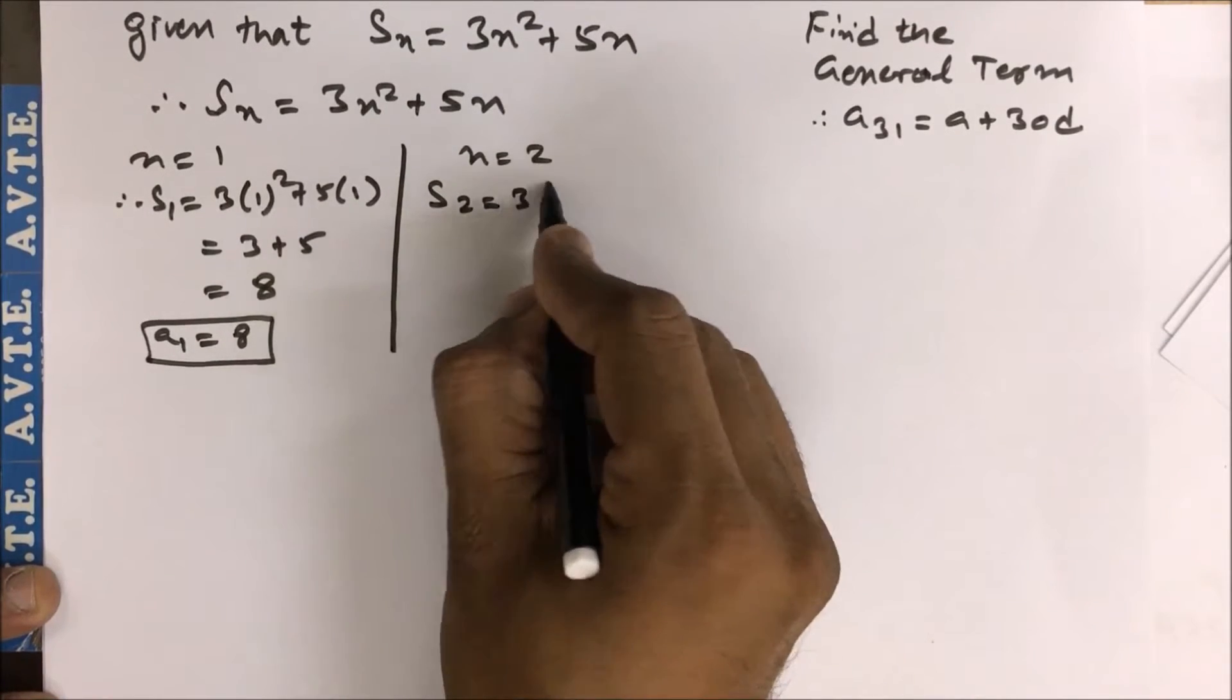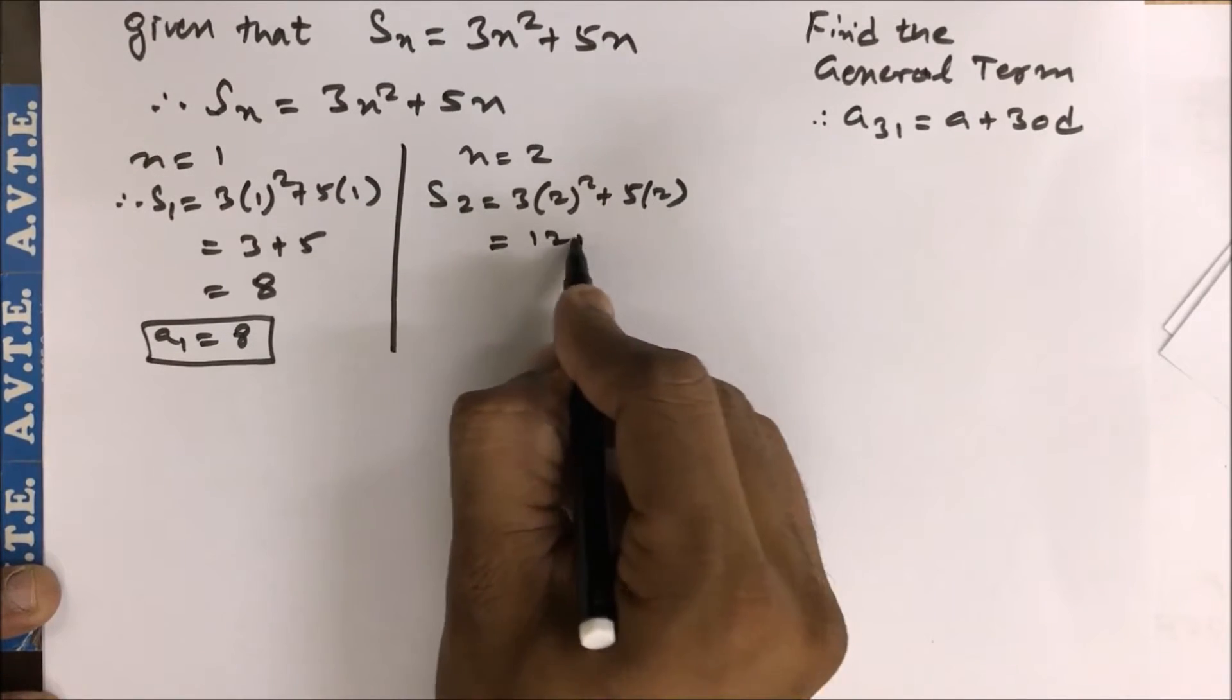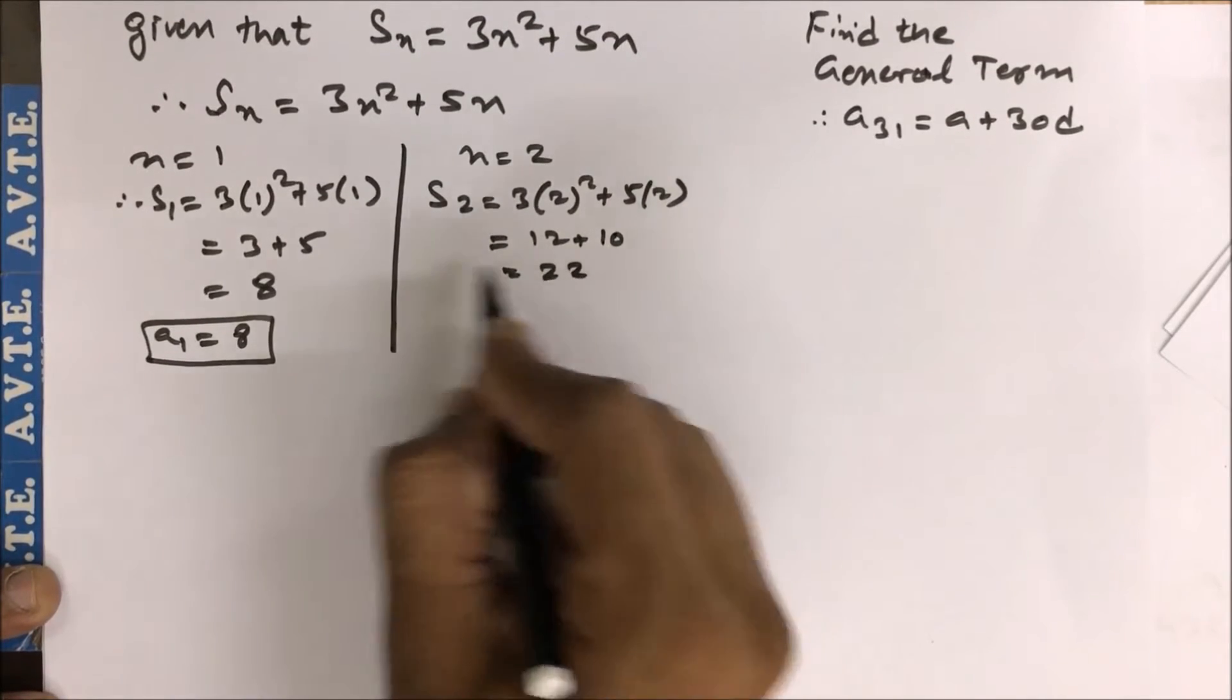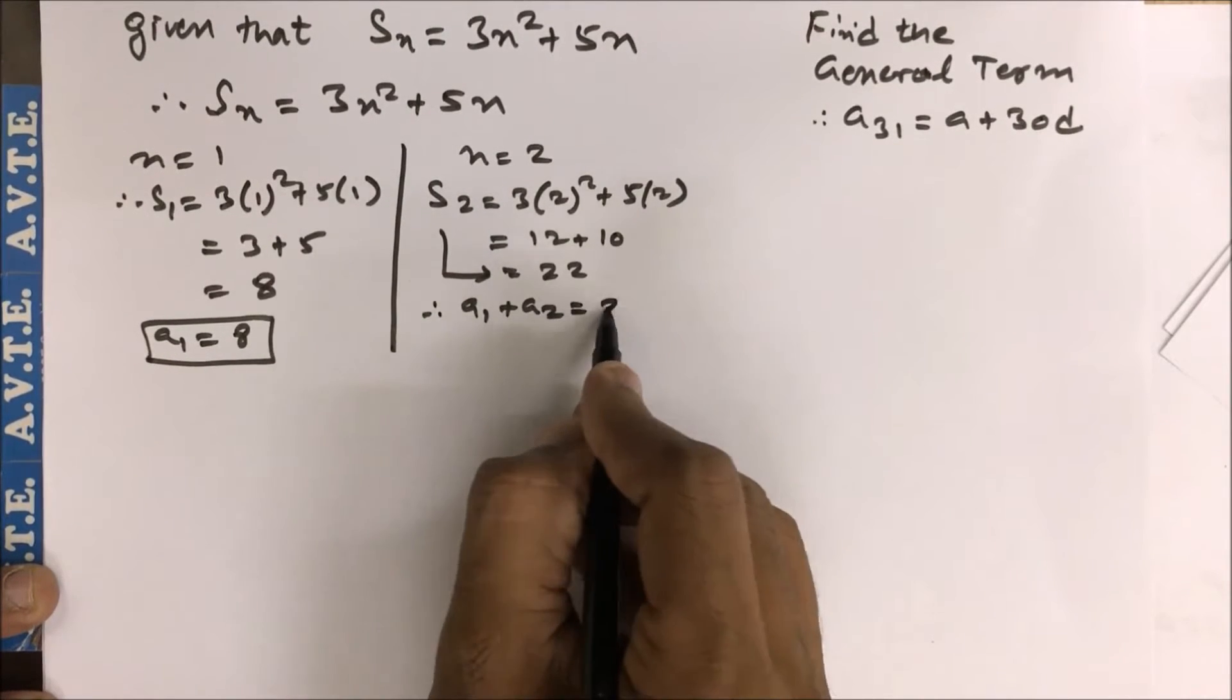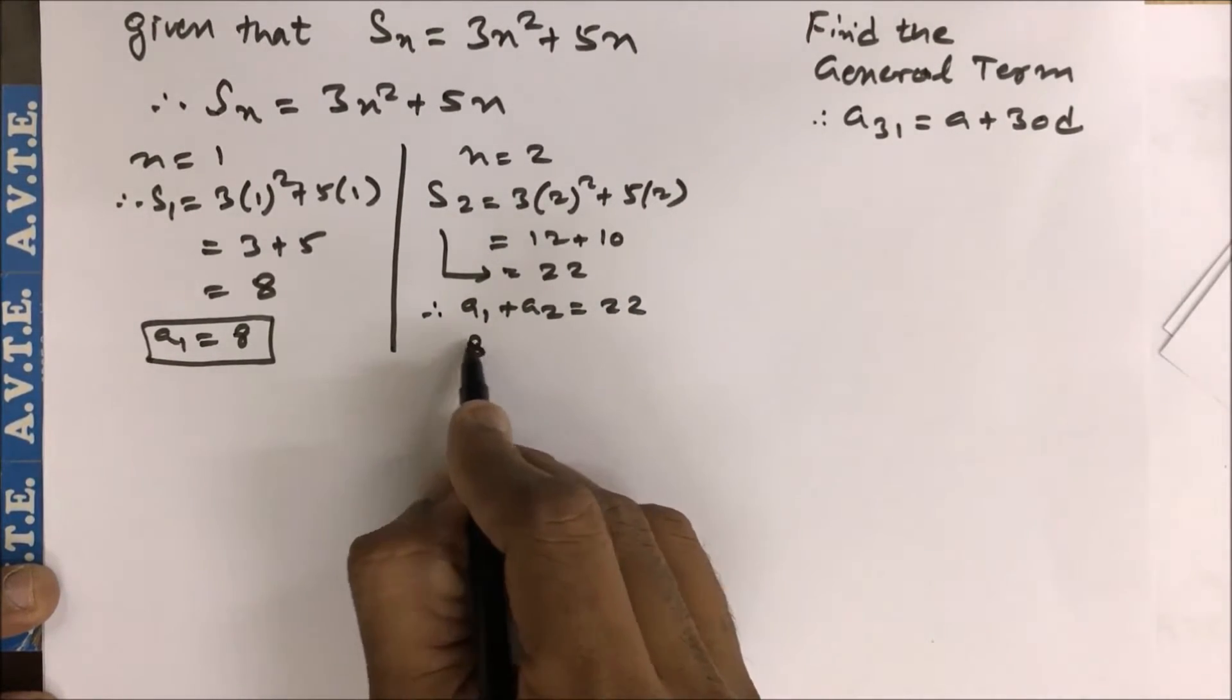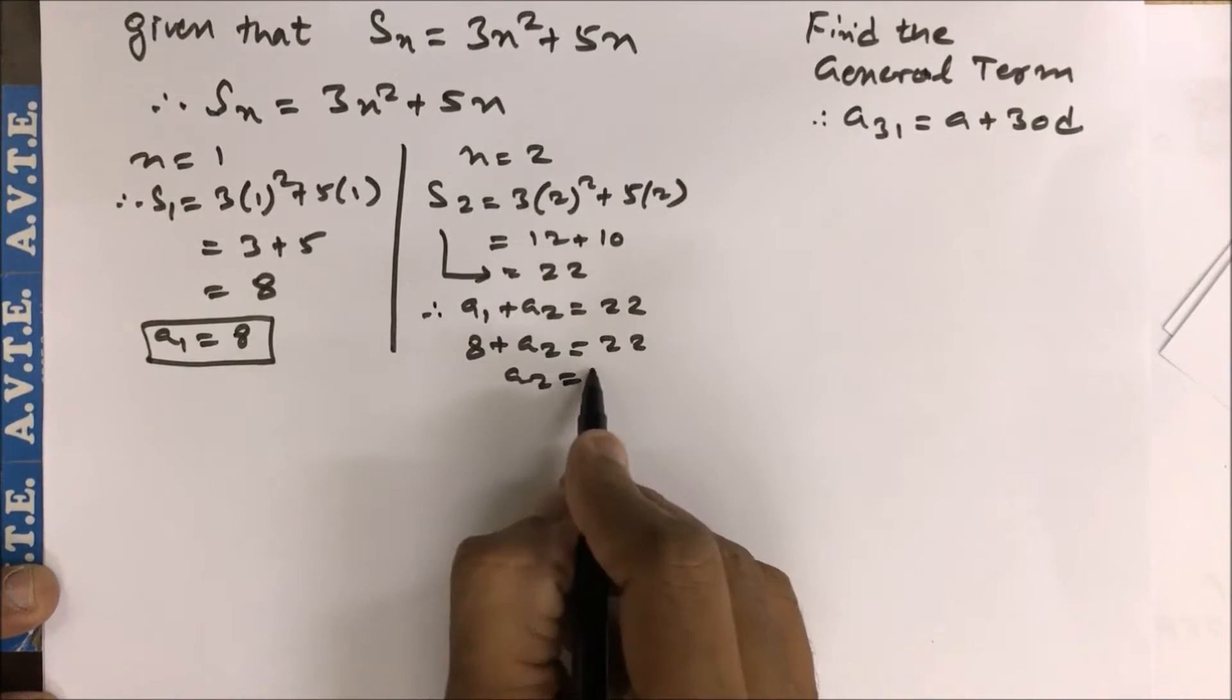This is your S₂. So this is your 12 plus 10, that is 22. This is your S₂. This is not your a₂, this is a₁ plus a₂. So here you go, 8 plus a₂ is 22, and your a₂ is 14.